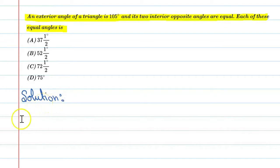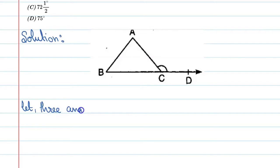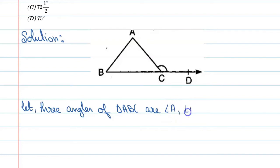Let's take a figure of it. This is A, B, C and this is the exterior angle, that is A, C, D. Let the three angles of triangle A, B, C be angle A, angle B, and angle C. It is given that angle A is equal to angle B.